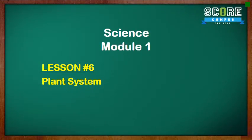This is lesson 6 of Science Module 1 and we will be covering plant system. By the end of this lesson, you should understand what a system is. You should be able to understand and recognize the difference between plant parts and understand their functions and also explain how and why different plant parts work together.